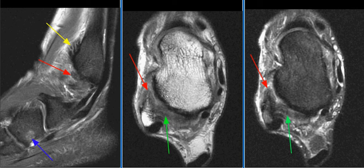The anterior talofibular ligament is best assessed on axial images at the level of the distal lateral malleolus. In acute sprains or partial tears, the ligament may be thickened and is of increased signal intensity with adjacent fluid or hemorrhage acutely, with blurring of the margins of the ligament.